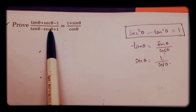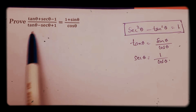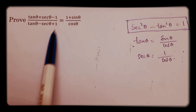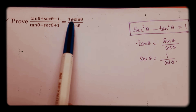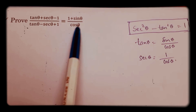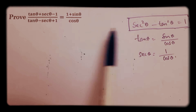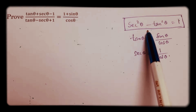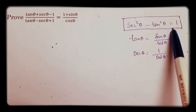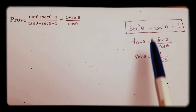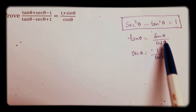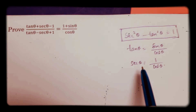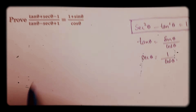Prove that (tan θ + sec θ - 1) / (tan θ - sec θ + 1) equals (1 + sin θ) / cos θ. In this problem, I will use the identity sec²θ - tan²θ = 1. We also know that tan θ = sin θ / cos θ, and sec θ = 1 / cos θ.